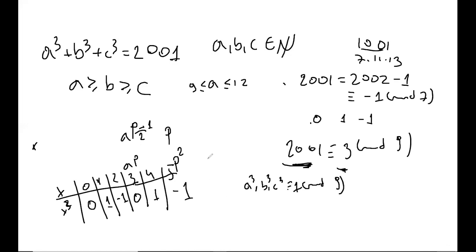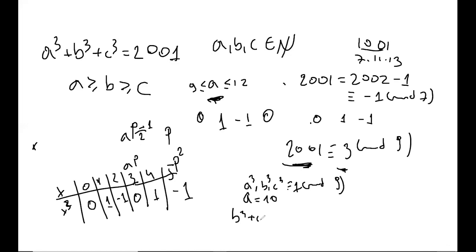Given a³ ≡ 1 mod 9 and 9 ≤ a ≤ 12: checking each value, 9 ≡ 0 mod 9, 10 ≡ 1 mod 9, 11 ≡ −1 mod 9, and 12 ≡ 0 mod 9. So a must equal 10. That gives us b³ + c³ = 1001. And again modulo 9, how can we estimate b?